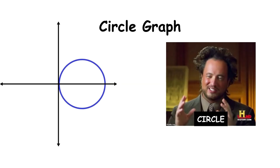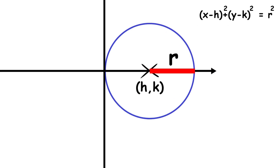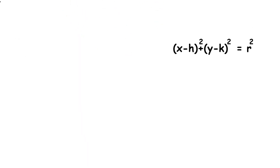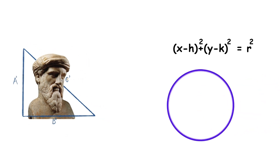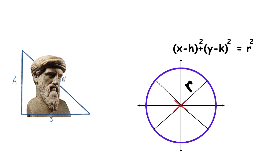The equation for the graph of a circle is the quantity x minus h squared plus the quantity y minus k squared equals r squared, where r is the radius and (h, k) is the center of the circle. This equation can be derived from the definition of the circle and the Pythagorean theorem. A circle is defined as the set of all points in a plane that are at an equal distance — the radius — from a given point, the center.